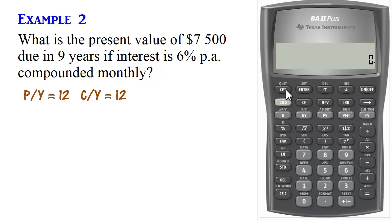For N, we have 9 years, compounded monthly. So we have 9 times 12 total compounding periods. That's 108 N.